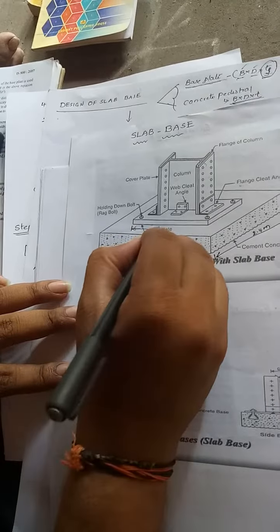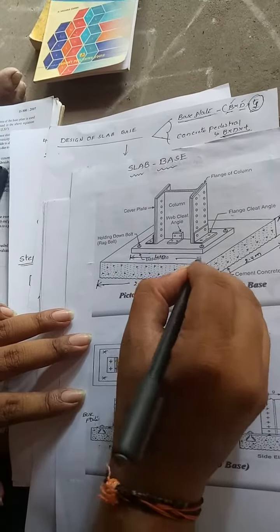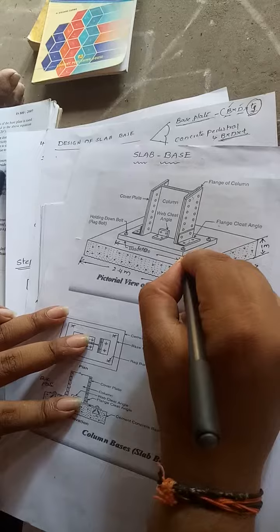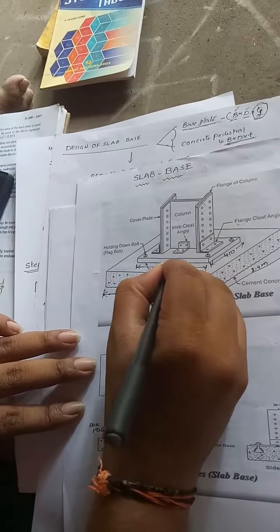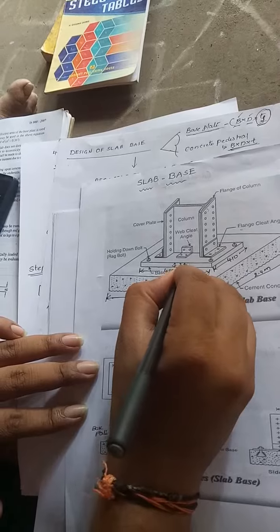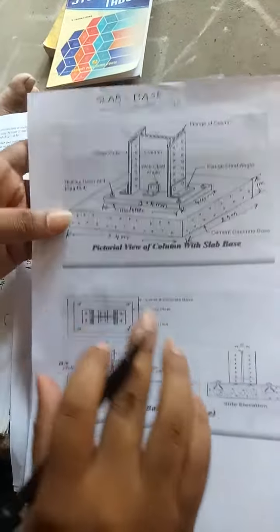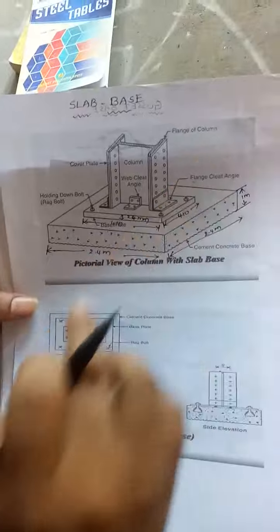These are the base plate dimensions: 410 mm by 410 mm, thickness 24 mm. So then finally we can